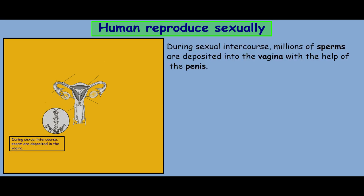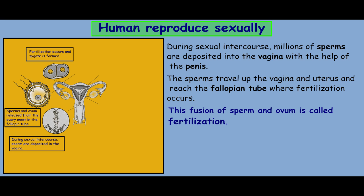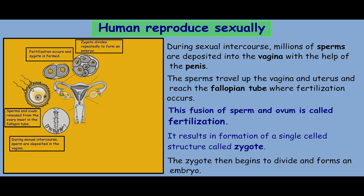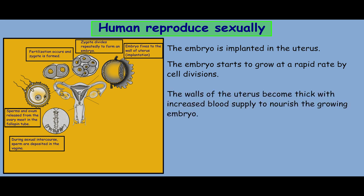During sexual intercourse, millions of sperms are deposited into the vagina with the help of the penis. The sperm travels up through the vagina and uterus and reaches the fallopian tube where fertilization occurs. The fusion of the sperm and ovum is called fertilization, and it results in the formation of a single-cell structure called a zygote. The zygote then begins to divide and form an embryo, which is implanted in the uterus and starts to grow at a rapid rate by cell division. The walls of the uterus become thick with increased blood supply to nourish the growing embryo.